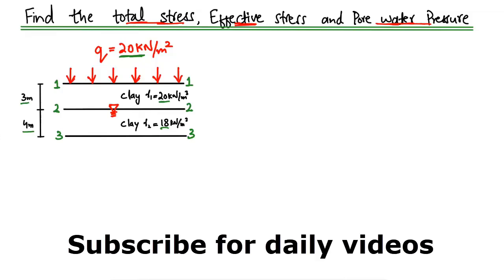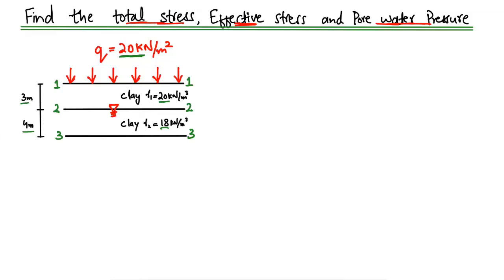We have to find out the total stress at each point — at point 1-1, then 2-2, and then at 3-3 — we have to find the total stress, the effective stress, and the pore water pressure. So we start with point 1-1.